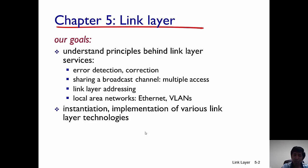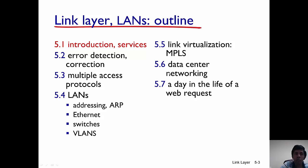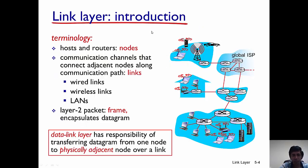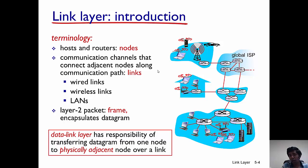Link layer addressing is slightly different from network layer addressing or IP packets. For the purposes of the link layer, all hosts and routers in the network are known as nodes. The communication channel between two nodes is called a link. A link can either be wired or wireless. For example, the link between two routers is a wired link, while the link between a mobile phone and a cell tower, or a laptop and an access point, is a wireless link.